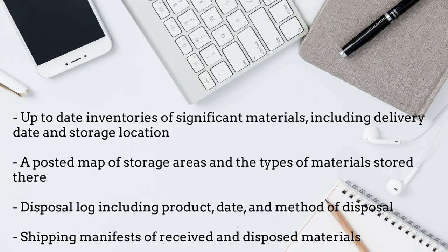Proper record keeping is essential in significant material management. Your records should include an up-to-date inventory of significant materials including delivery date and storage location, a posted map of storage areas and the types of materials stored there, a disposal log including product, date, and method of disposal, and shipping manifests of received and disposed materials. Materials should be used on a first-in, first-out basis with outdated products promptly and properly disposed.